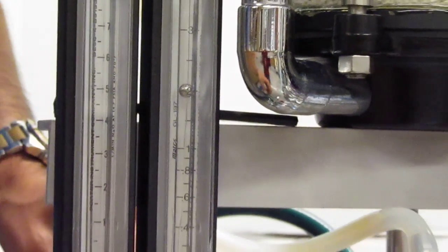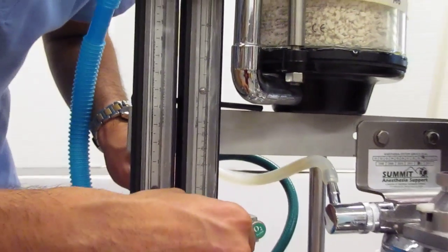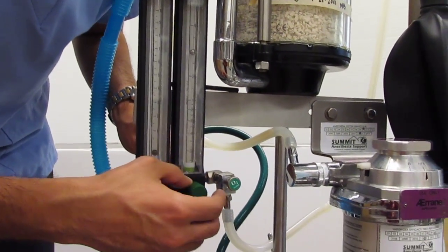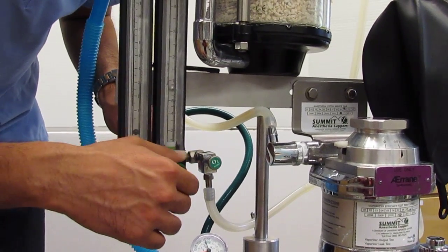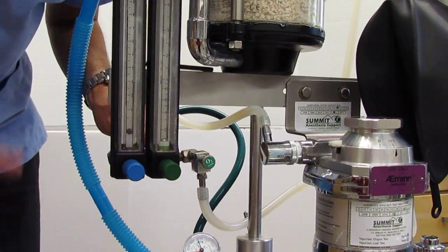One thing about using this dial on the flow meter is that you don't have to crank it. You can open it gently and you get a change in the reading. You can also close it and as soon as I hit zero, that's it, I'm at zero.